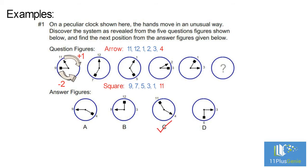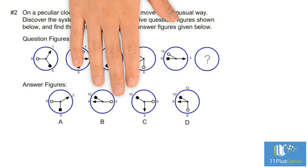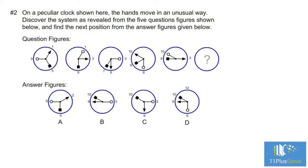Number two: On a peculiar clock shown here, the hands move in an unusual way. Discover the system as revealed from the five question figures shown below, and find the next position from the answer figures given.